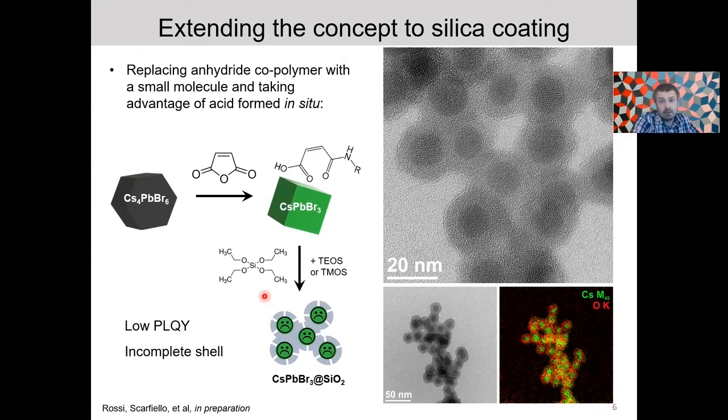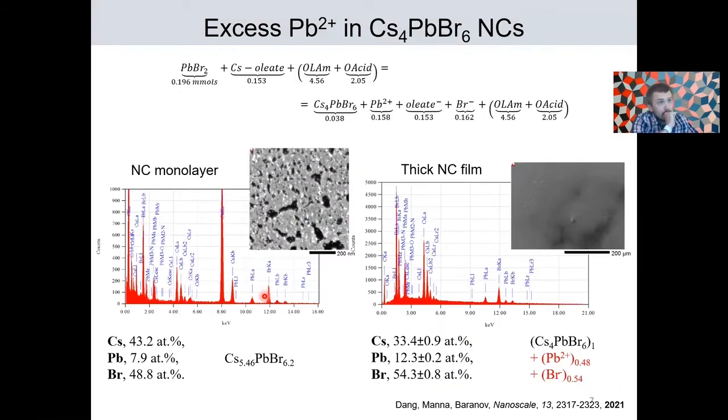Next, I want to change gears a little bit and talk about actually starting zero-D nanocrystals. So in one case, we observed an interesting result when we were characterizing elemental composition of the starting cesium lead bromide-6 particles. We saw that in a sample, when we look at the nanocrystal monolayer in transmission electron microscope, then we see that the composition is slightly cesium-rich, which we attributed to the presence of cesium oleate on the surface.